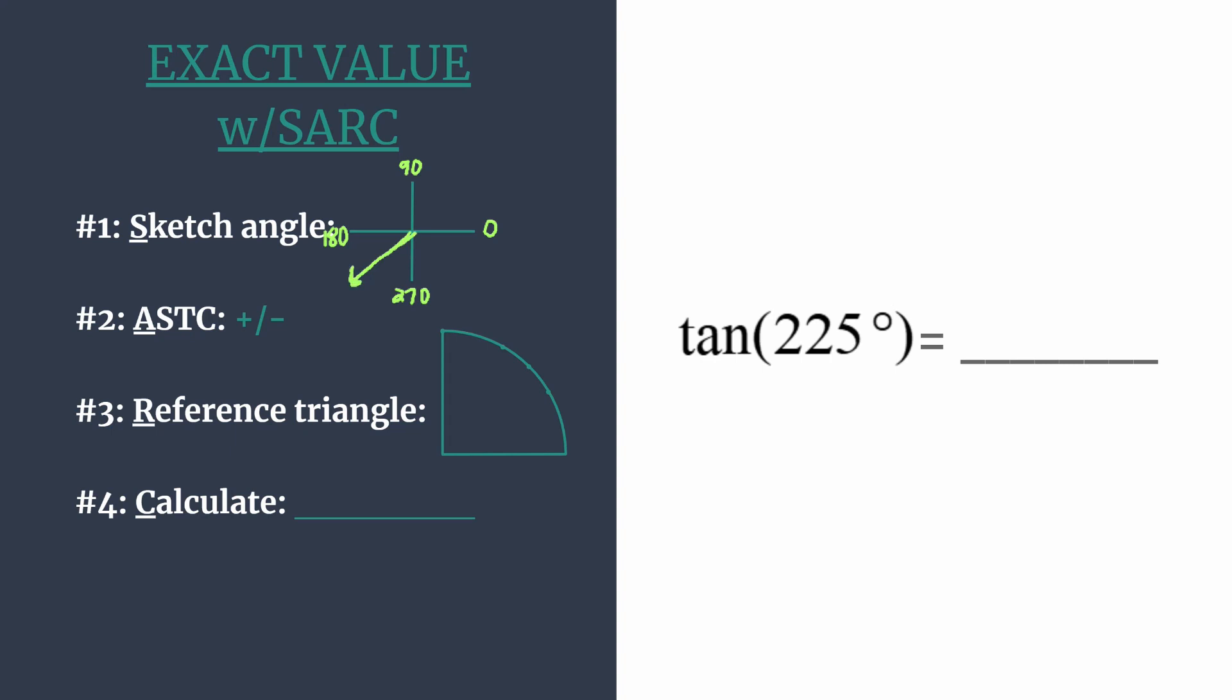Now we can use ASTC, all students take classes, to figure out is our final answer, our tangent of 225, going to be positive or negative. And so these letters just help us know which trig functions and the reciprocals are positive in the corresponding quadrants.